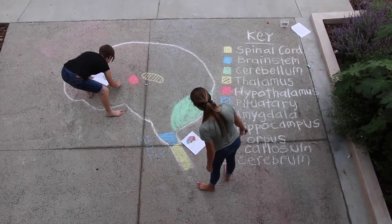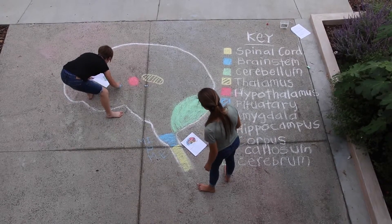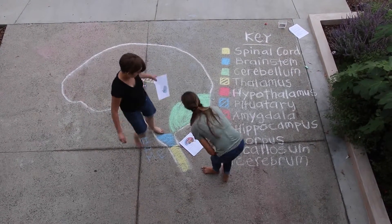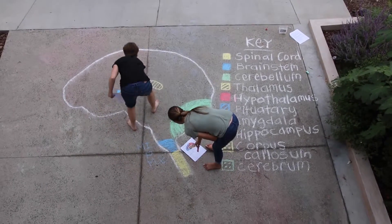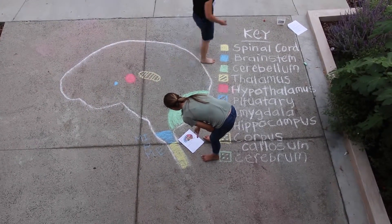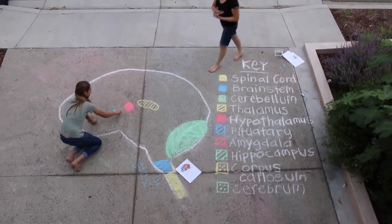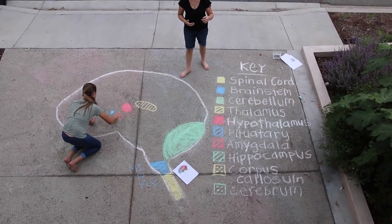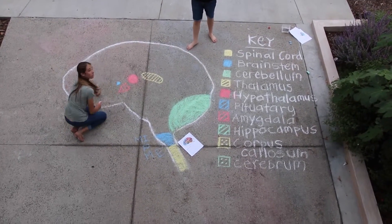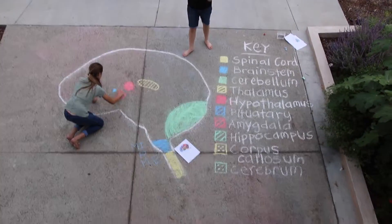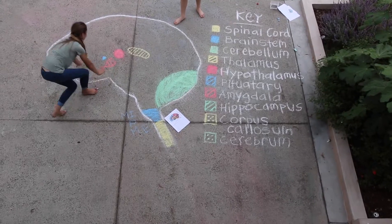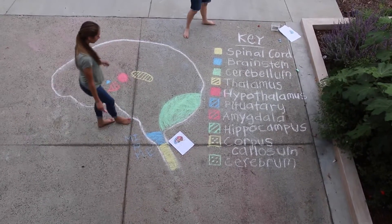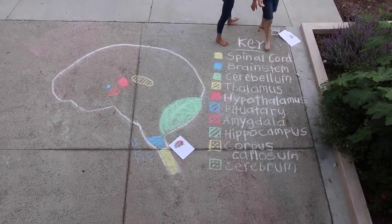Now onto the posterior pituitary gland. It is attached to the base of the brain, located between the pons and the corpus callosum. It sends out hormones that control various bodily functions and is the master of the endocrine gland. It also regulates growth. The amygdala consists of two lima bean-sized neural clusters in the limbic system, linked to emotion — associated mainly with aggression and fear.